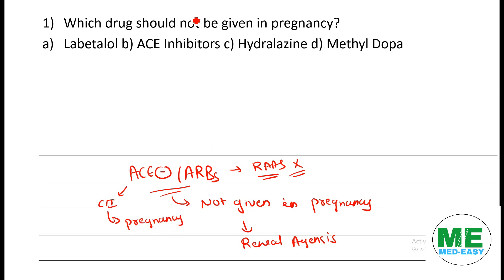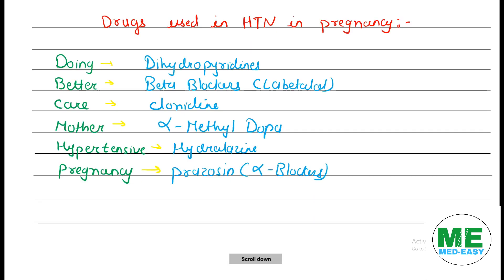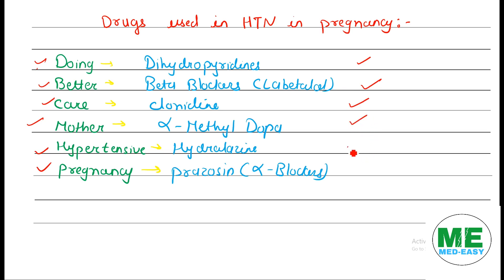Now we will see which drugs can be given in pregnancy. The drugs used in hypertension in pregnancy — we can use the mnemonic 'BETTER MOTHER CARE': D for dihydropyridine, B for beta blockers like labetalol, C for clonidine, M for alpha methyldopa, H for hydralazine, and P for prazosin.